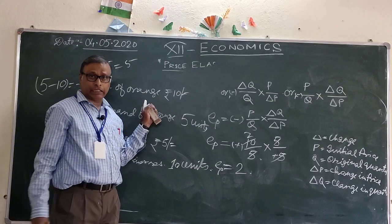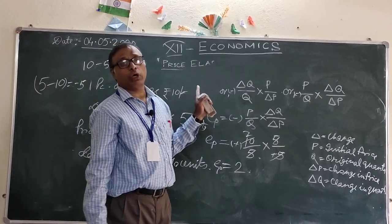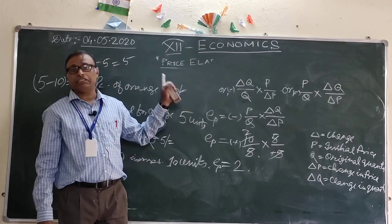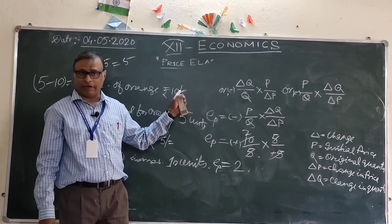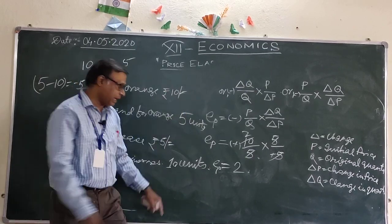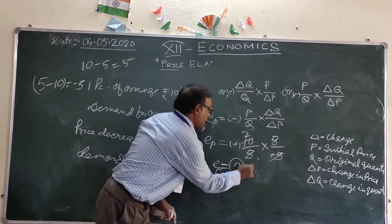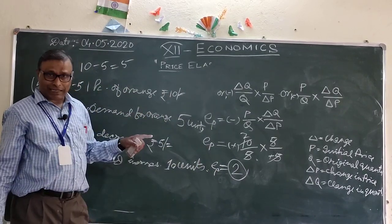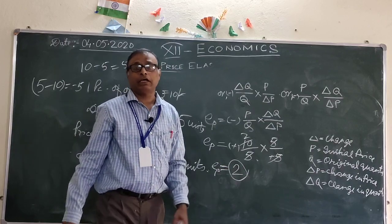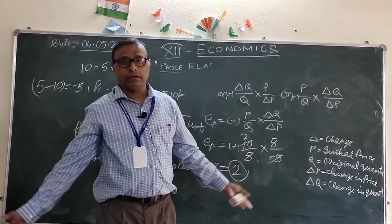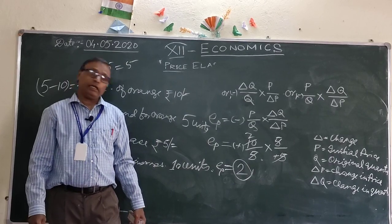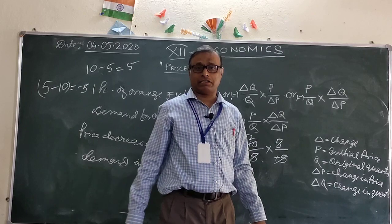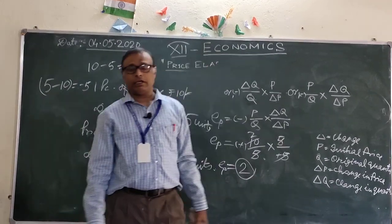So we can say if price of the commodity decreases by 1%, demand increases by 2%. Next we will look at income elasticity of demand and factors determining the elasticity of demand. Thank you.